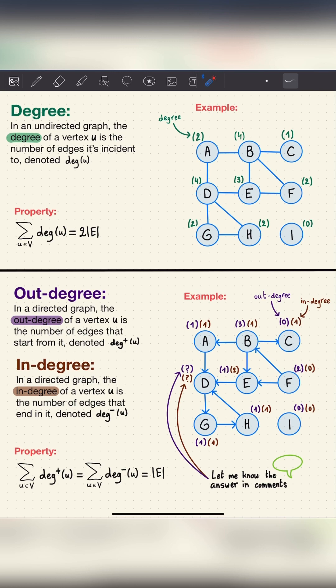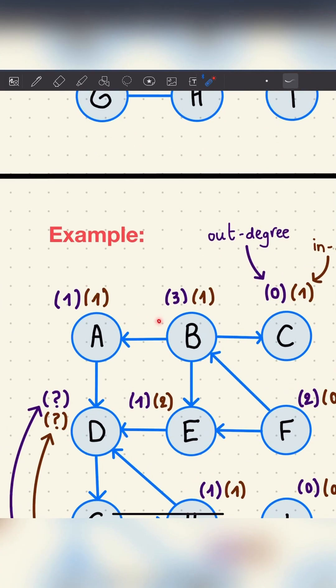What about directed graphs? We have the outdegree, the number of edges that start from it. For example, here b has an outdegree of 3 because it has 3 edges starting from it.